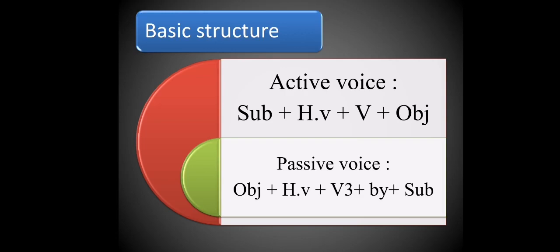In passive voice, the verb form must be V3 — compulsory. In tenses we use V1, V2, V3, but in passive voice, whatever tense it may be, the verb form must always be V3. Remember that. Also, the subject goes after 'by' at the end: Object + Helping Verb + V3 + by + Subject.